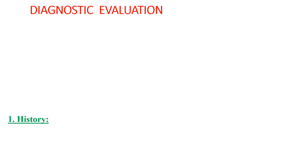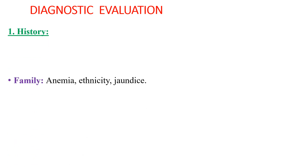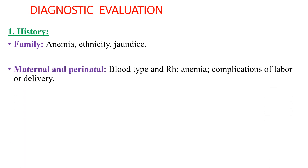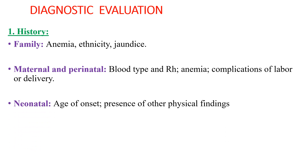Diagnostic evaluation starts from an appropriate history and good physical examination. You should ask about family history of anemia and jaundice, maternal and perinatal causes such as blood type of the mother, any complications during pregnancy and labor, and neonatal causes such as age of the neonate and presence of other clinical findings that suggest the underlying cause.